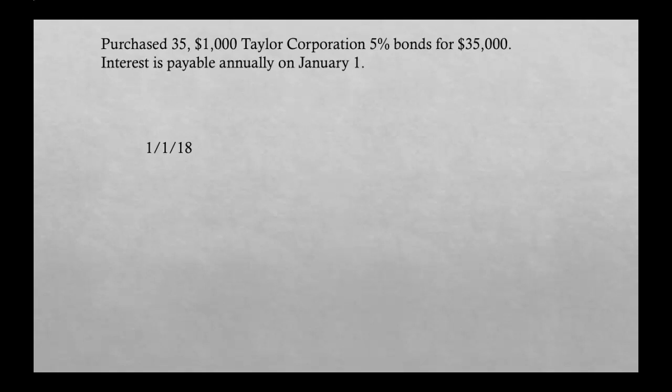For our journal entry: we are investing in another company's debt, and we call that debt investments. So we will debit Debt Investments. We are paying with cash, so we credit Cash. The amount is the total spent when purchasing all of these bonds — $35,000.